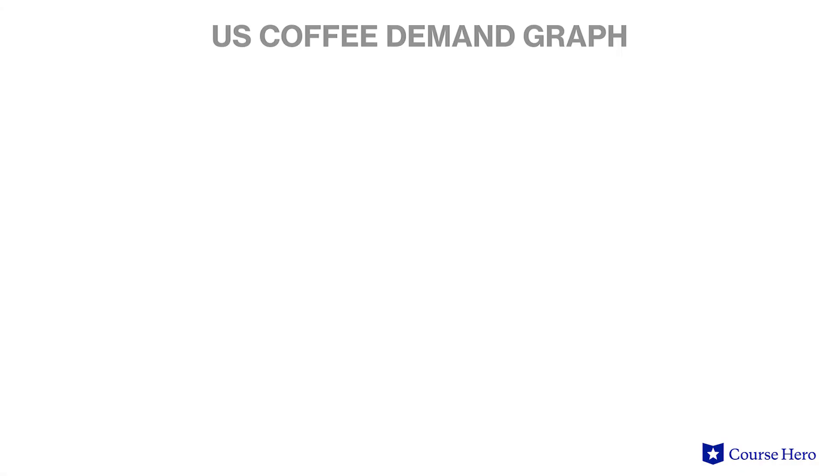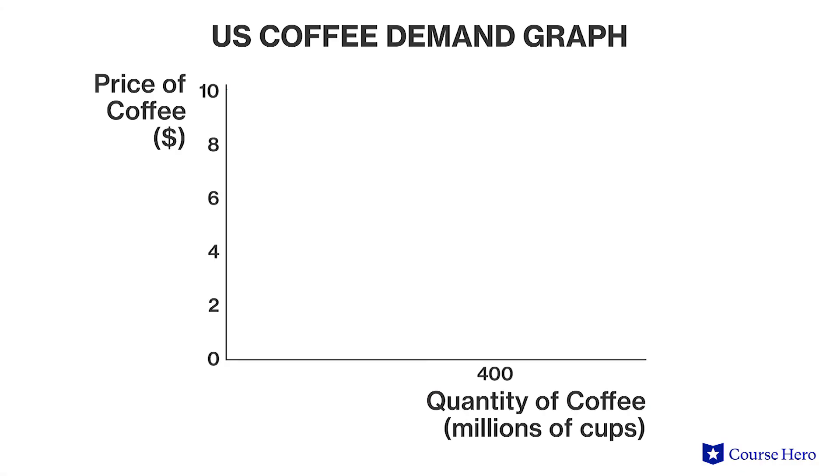The demand curve can be drawn as a step diagram for a scenario involving only a few potential consumers in a market. But with a large enough market, those individual steps will smooth out and we will have a demand curve that is a downward sloping line. Smoothing out data is done to show key patterns in data without zeroing in on fine details.